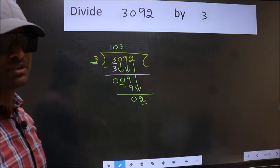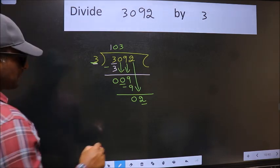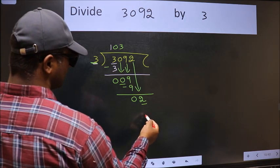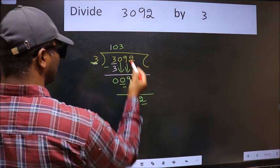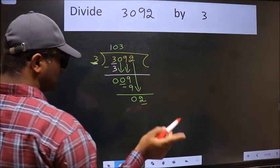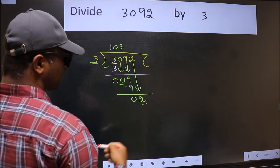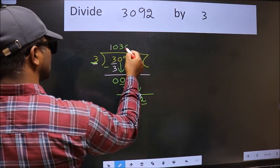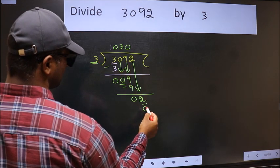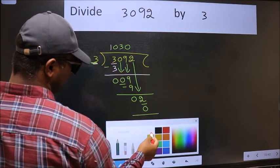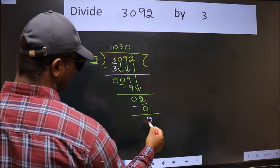Instead of that, what you should think of doing is which number should we take here. If I take 1, we will get 3, but 3 is larger than 2. So what we should do is we should take 0. So 3 into 0 is 0. Now we should subtract. We get 2.